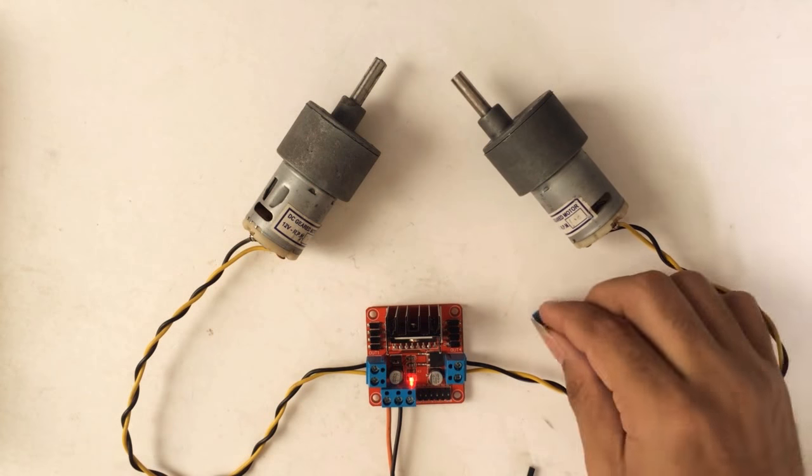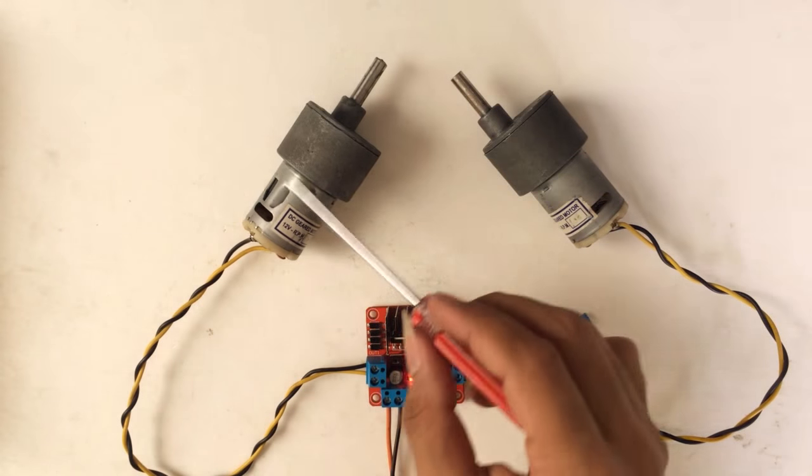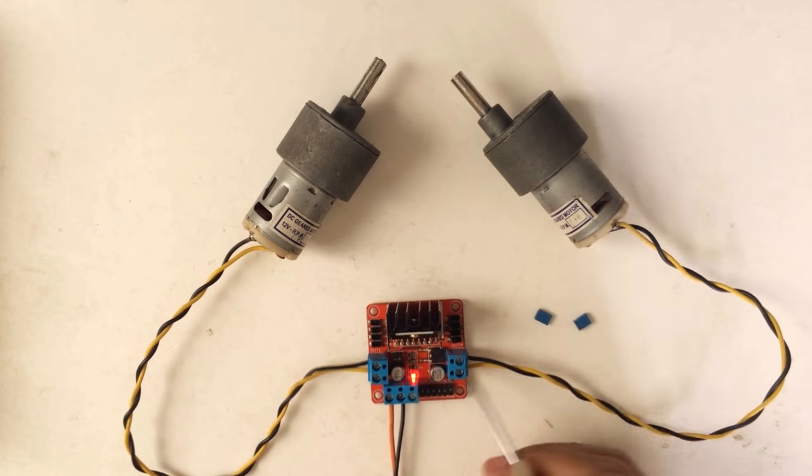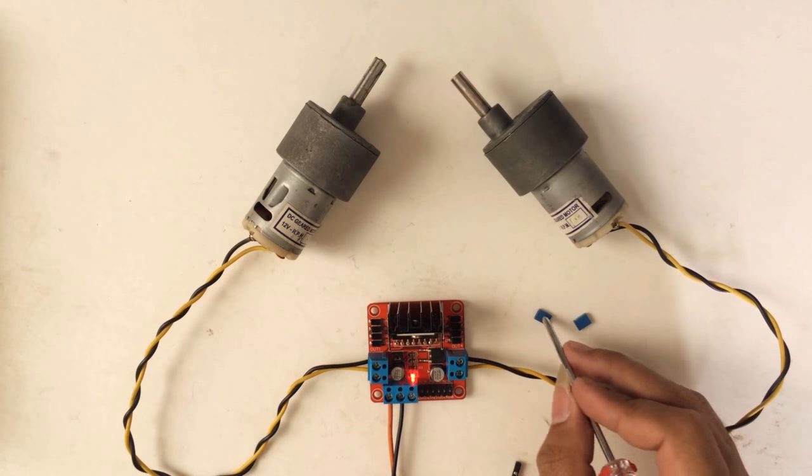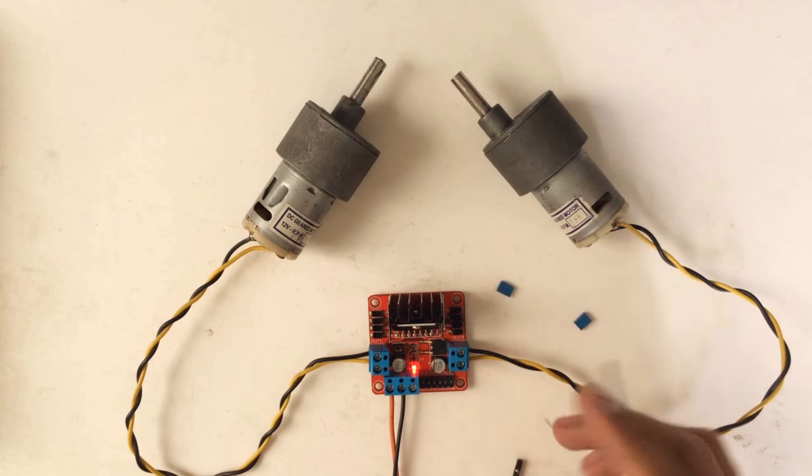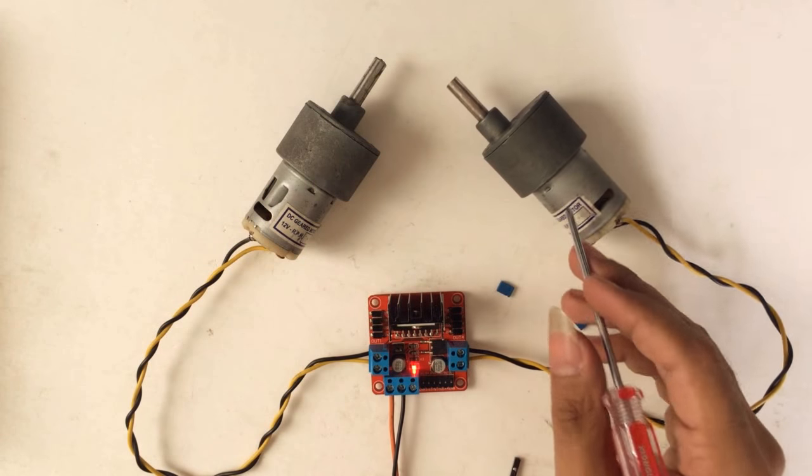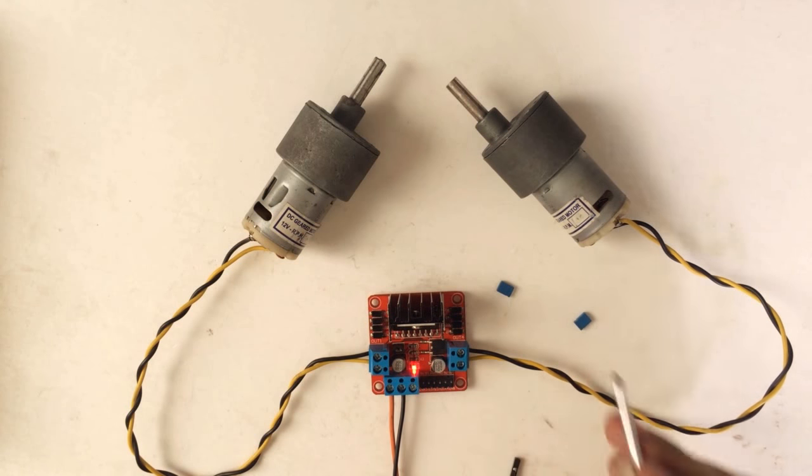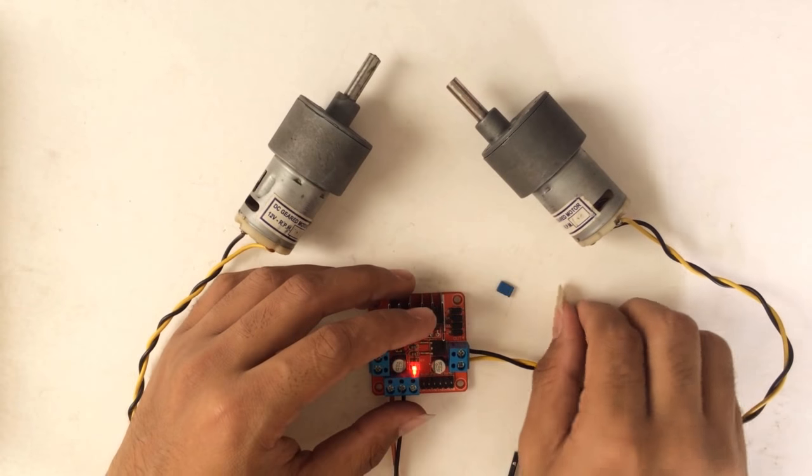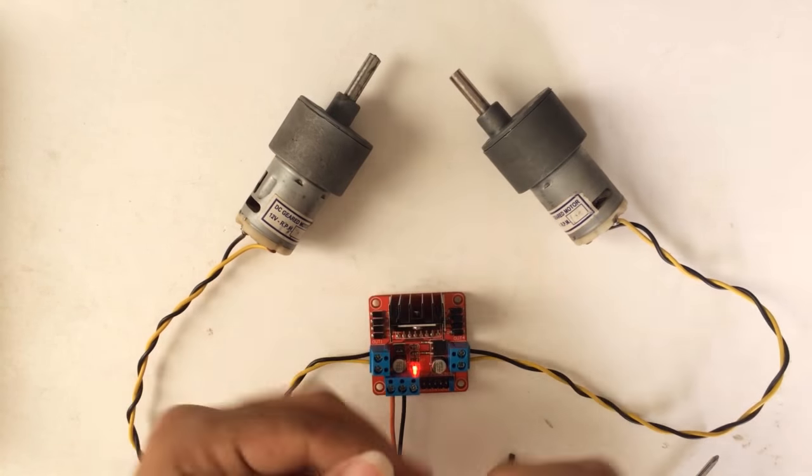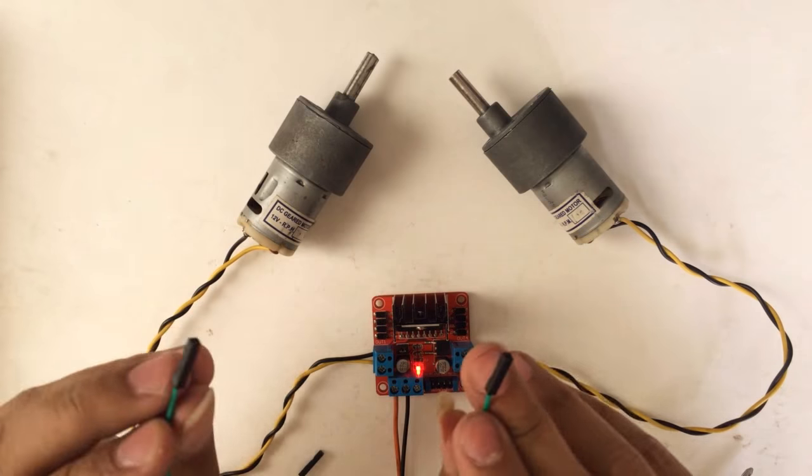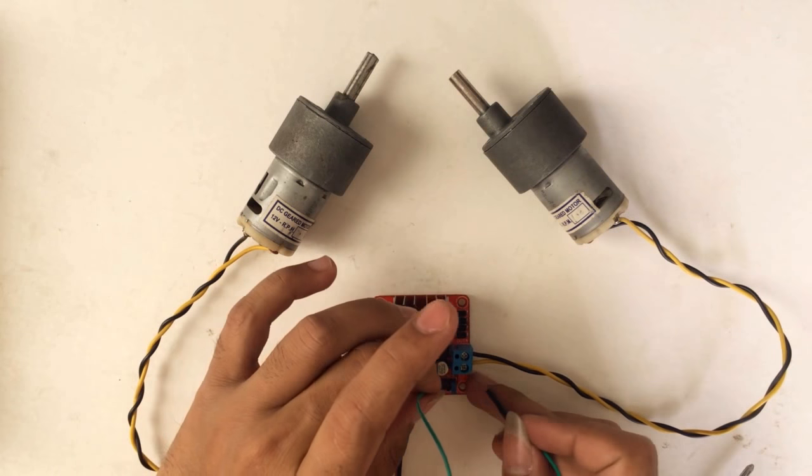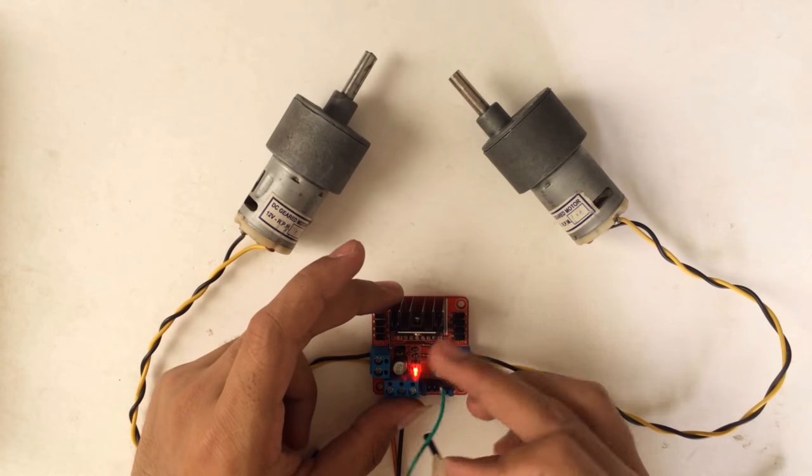First, to enable Motor A we need to insert the Enable A pin and 5 volt, or short these two terminals with this jumper. And to enable Motor B we have to short these two with this jumper, so we'll start placing the jumper here. To test we'll take one female to female connector, insert in 5 volt.